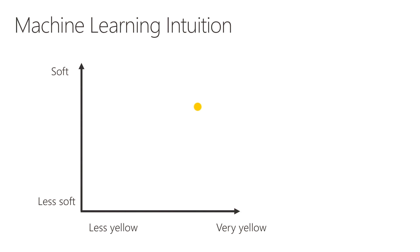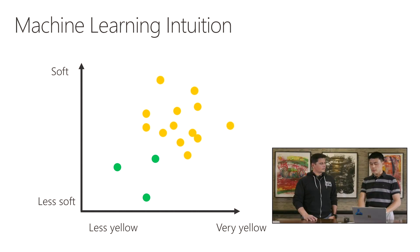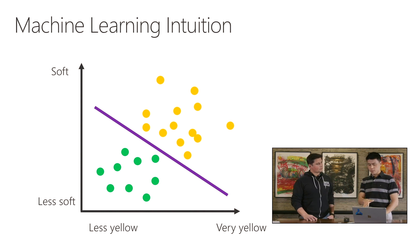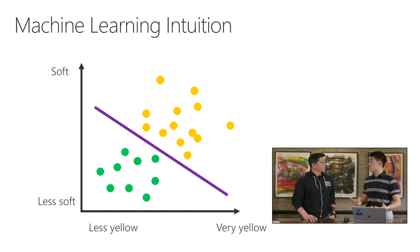So we start with a ripe banana, and my instrument tells me this is how yellow it is and this is how soft it is. I have a few more ripe bananas, getting more instrument readings. And now I also have my raw or unripe bananas and these are their instrument readings. So I just have a bunch of ripe bananas and a bunch of raw bananas. Now what I want to do is create a boundary between the ripe and the raw bananas. When I train my model, what's really happening is this purple line here — I'm creating a decision boundary between my ripe bananas and my raw bananas.